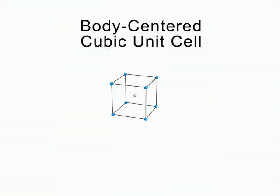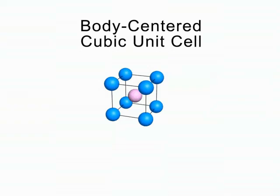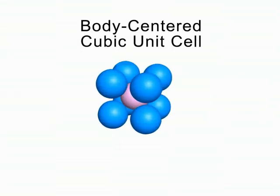The body-centered cubic unit cell has a particle at each corner and one in the center, which is colored pink to make it easier to see. With full-size spheres, you can see that the particles don't touch along the edges of the cube.